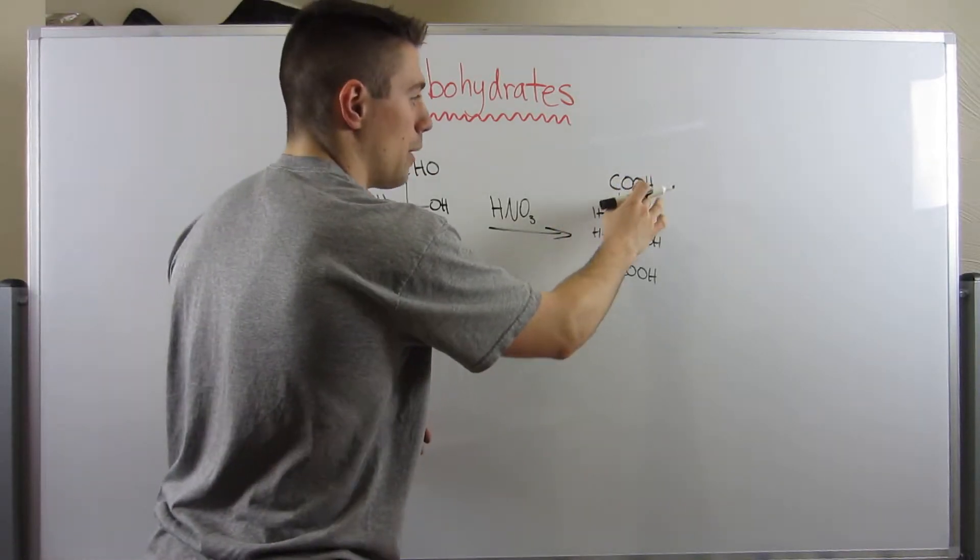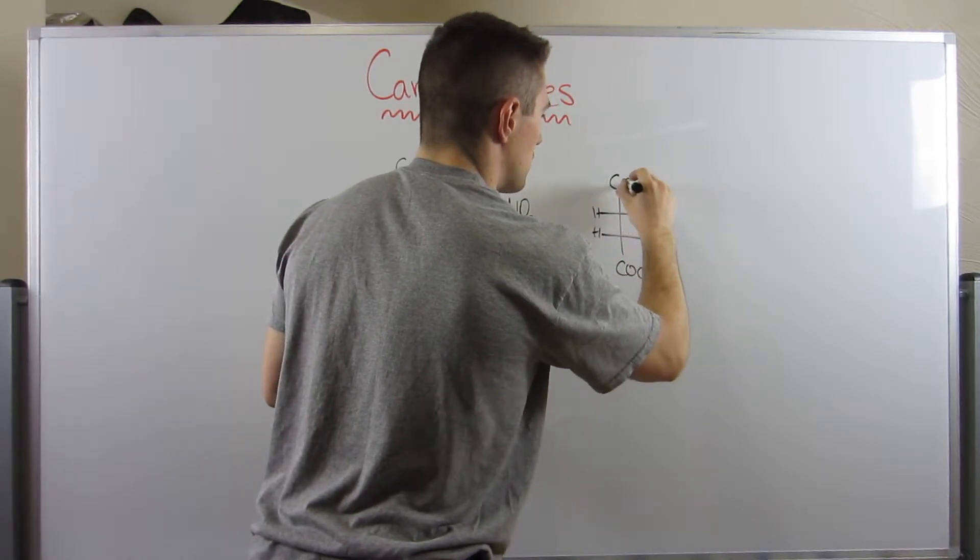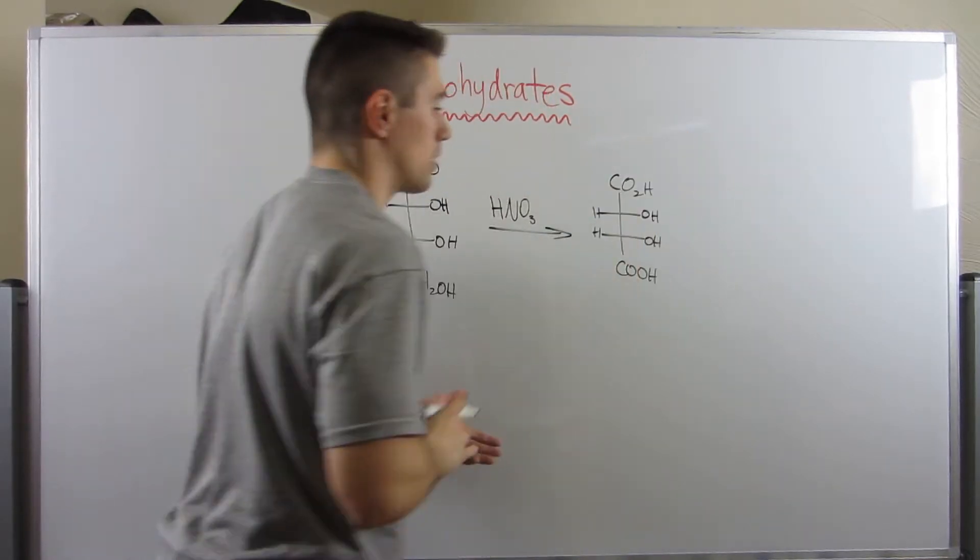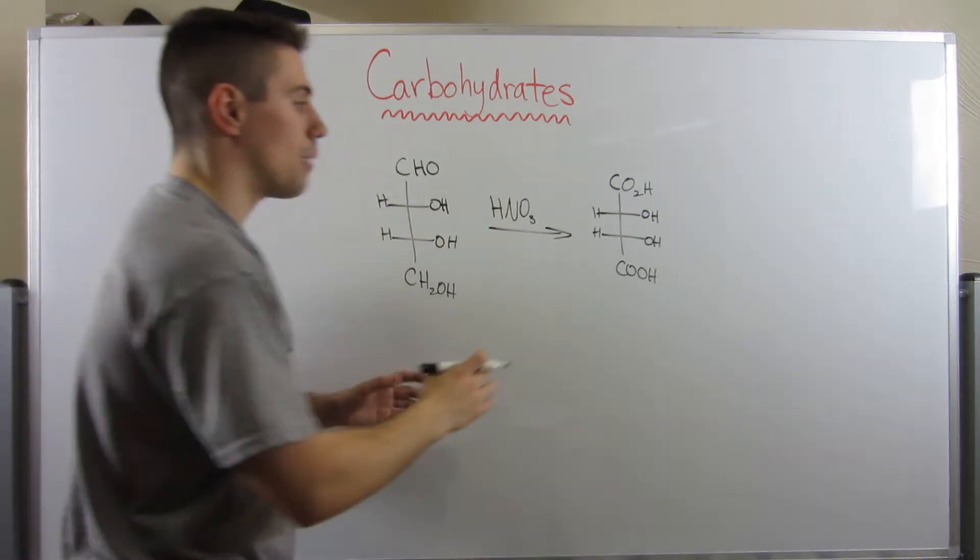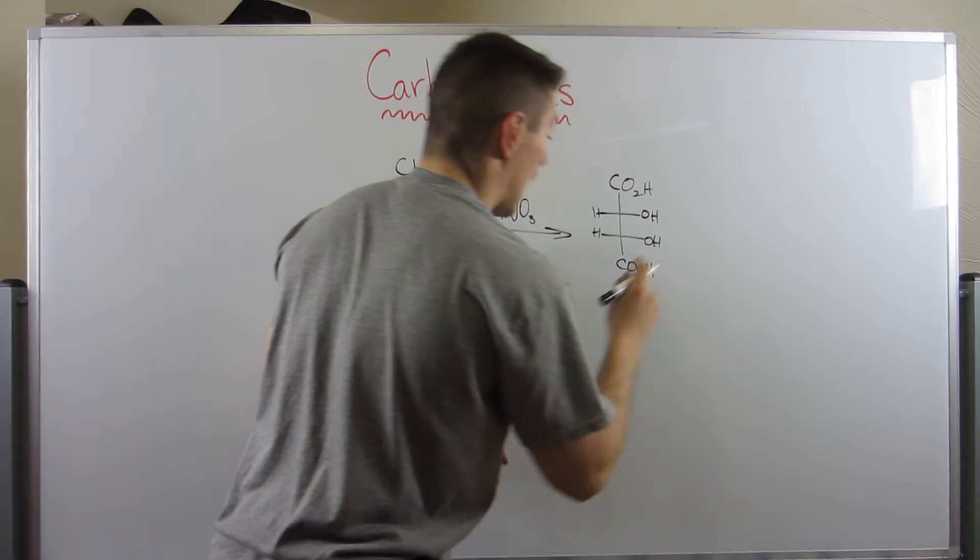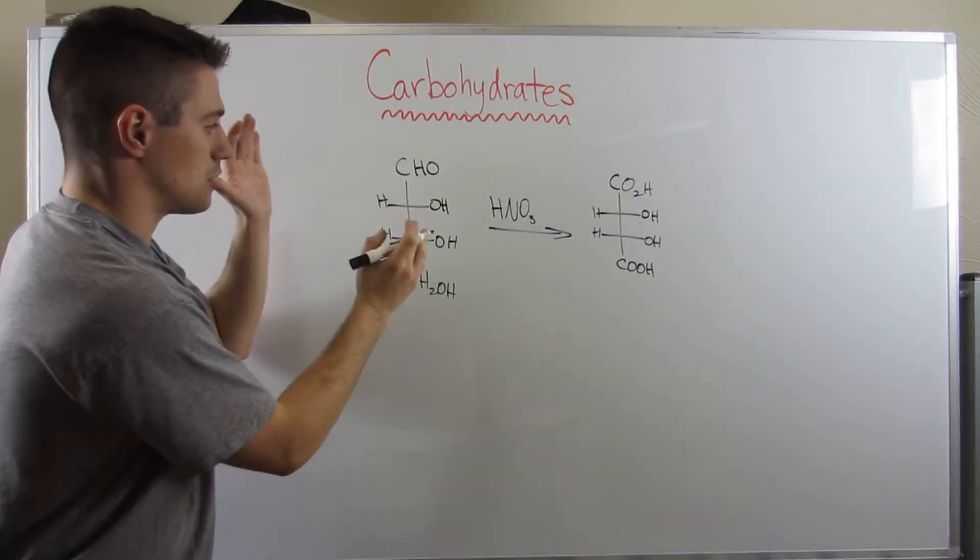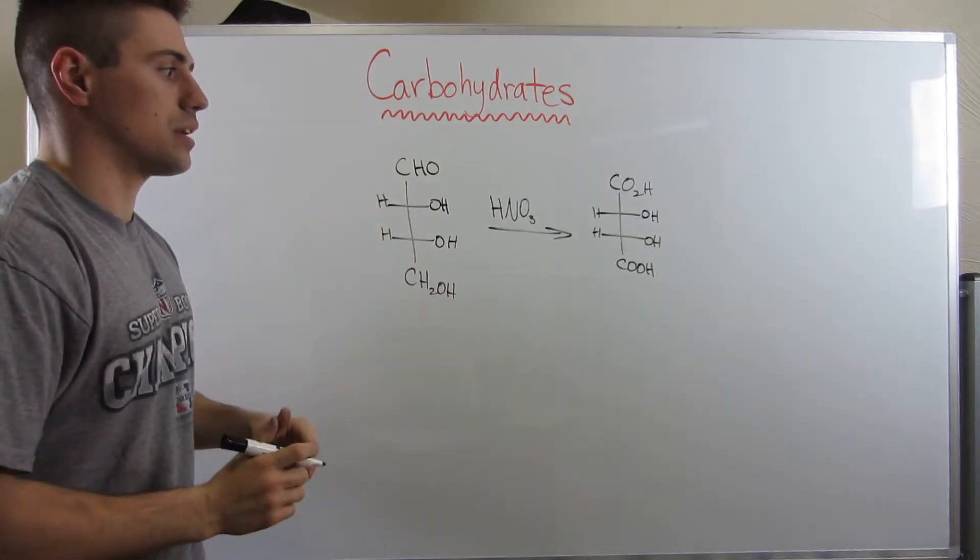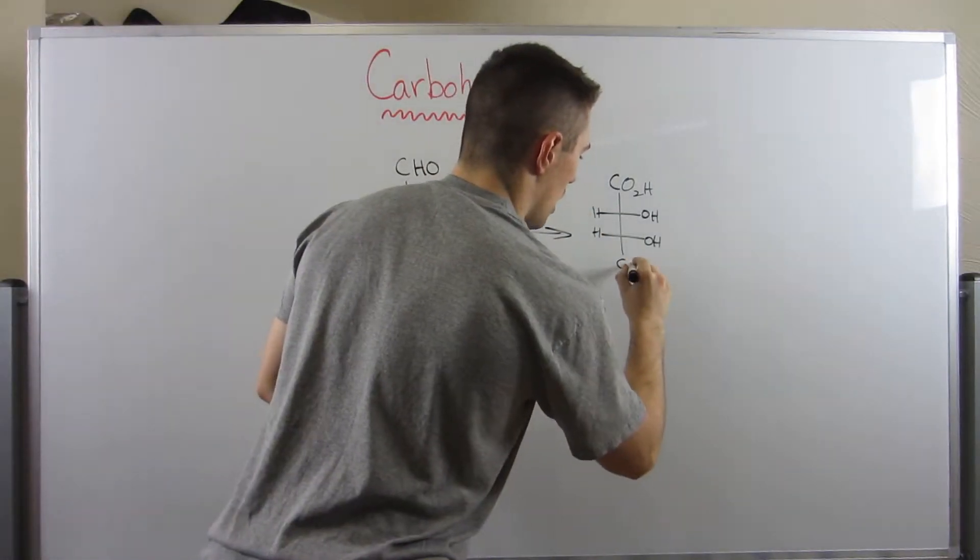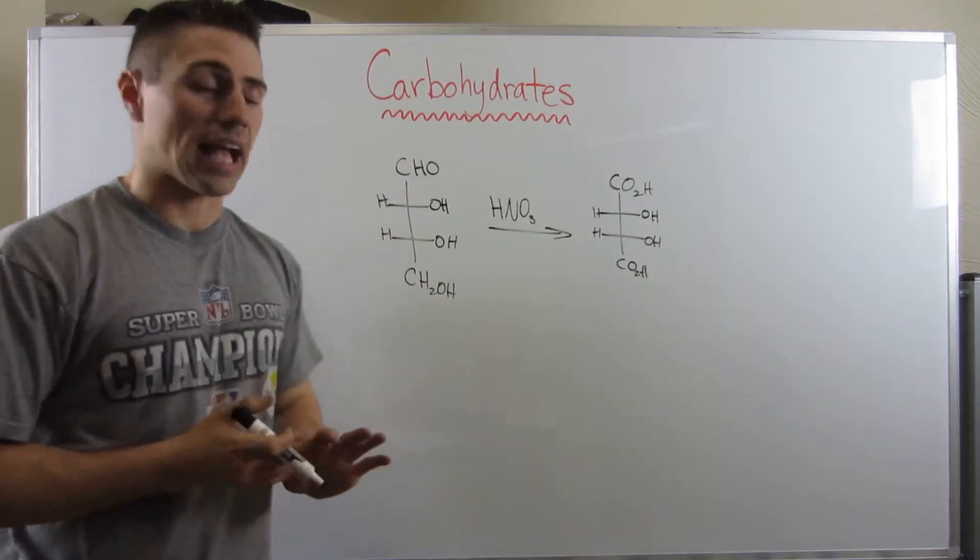And you'll either see COOH, or some people even get a little lazier and they'll write CO2H. Carboxylic acid on top and on bottom. So personally, I had this question on my Organic 2 final. It was literally, I got a generic sugar, I saw HNO3, I just had to know, okay, oxidize the top two groups fully all the way to a carboxylic acid.